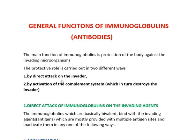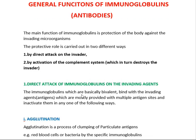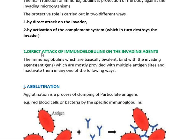The first way is by direct attack on the invader — the invading microorganisms. The second one is by the activation of a complement system. So by these two ways, the antibodies or immunoglobulins are going to protect us from invading microorganisms: one by direct attack, and the second by activating the complement system, which together with the antibodies will destroy the invader.